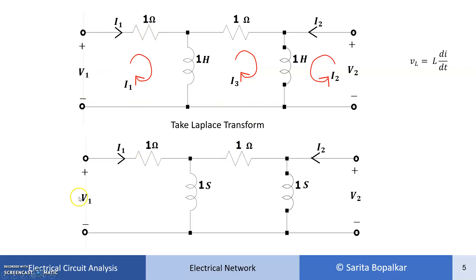Resistors remain as they are and variables remain as they are. The inductors of value 1H each become 1S in the transform domain. So LS is the transform form of the inductor, and now it is very easy to apply KVL to get the Z parameters.